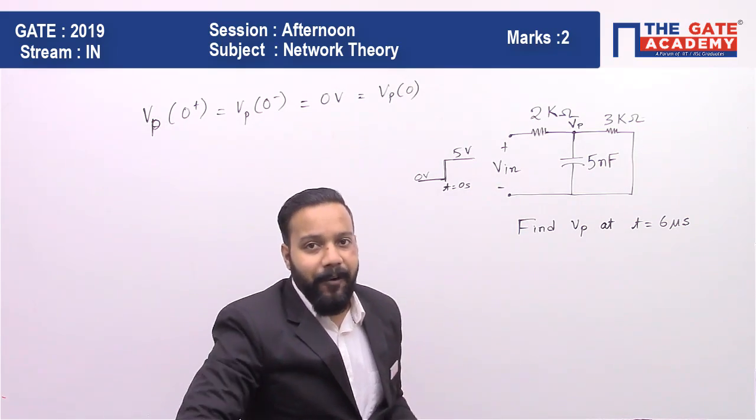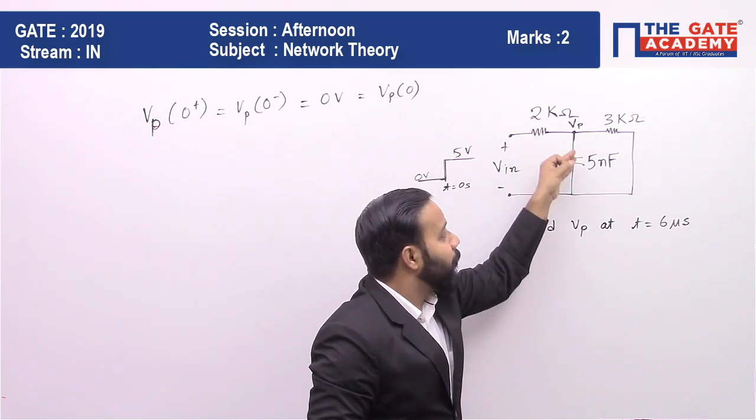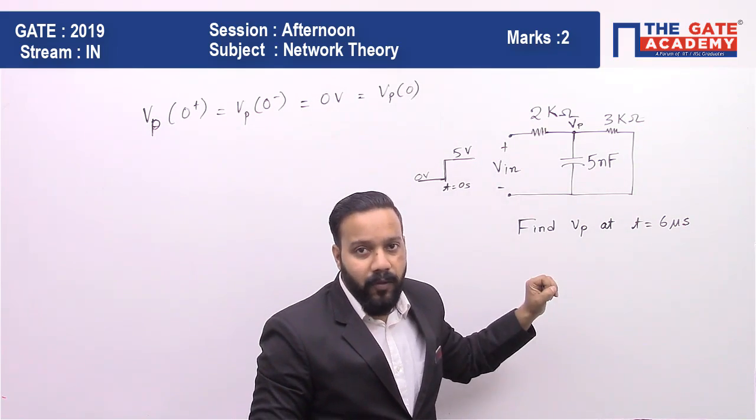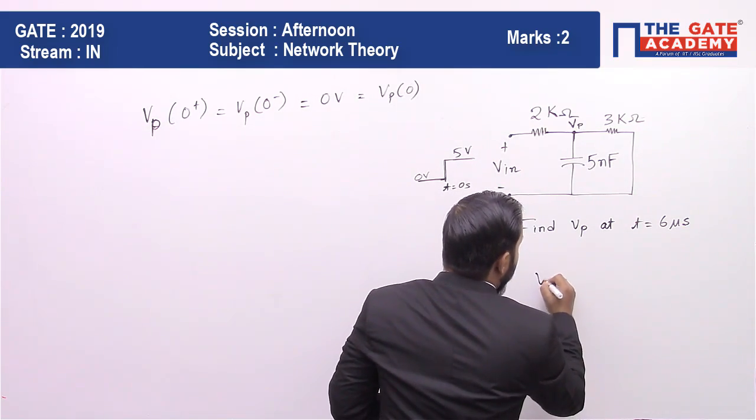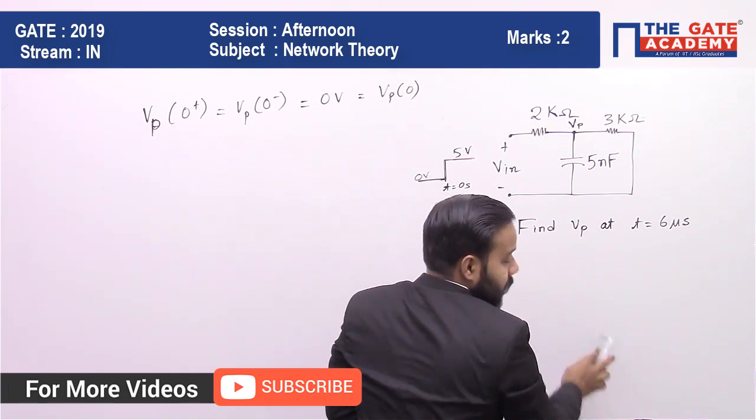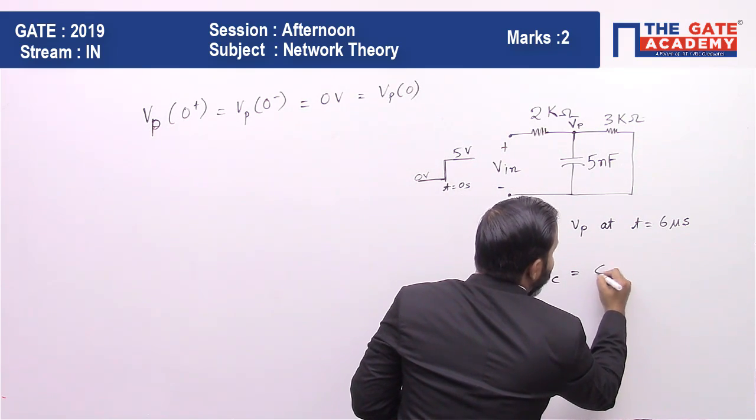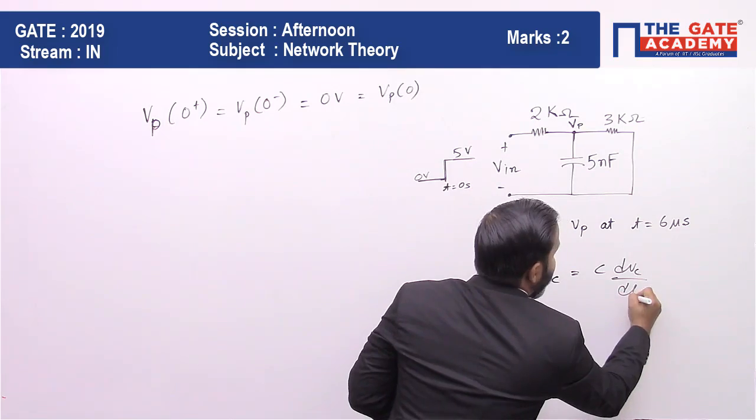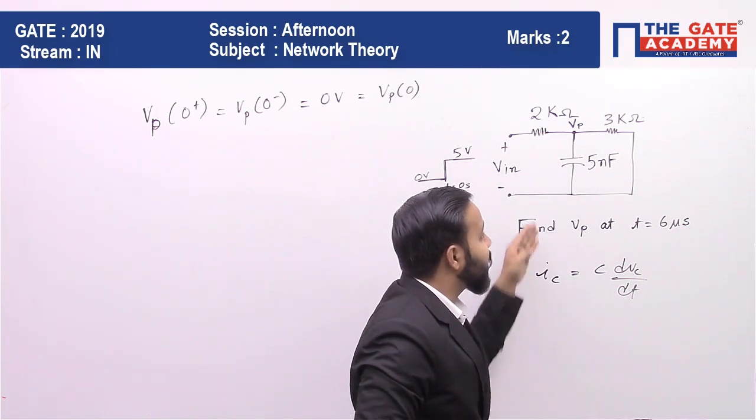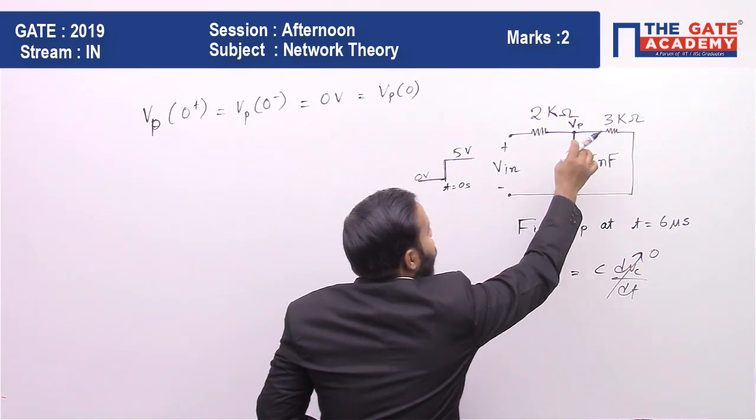Now we will see what vp final will be. For capacitors we know that in steady state the voltage becomes constant, so vc equals... the current ic equals c dvc/dt. When voltage becomes constant, the current becomes 0.